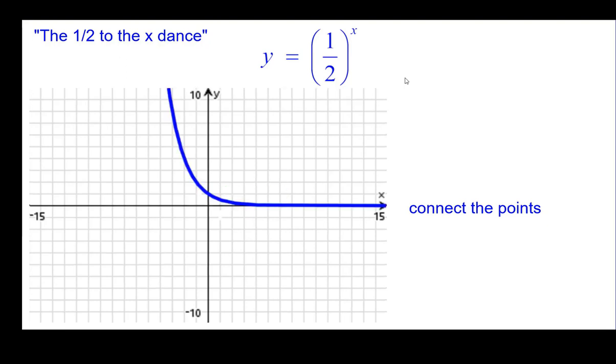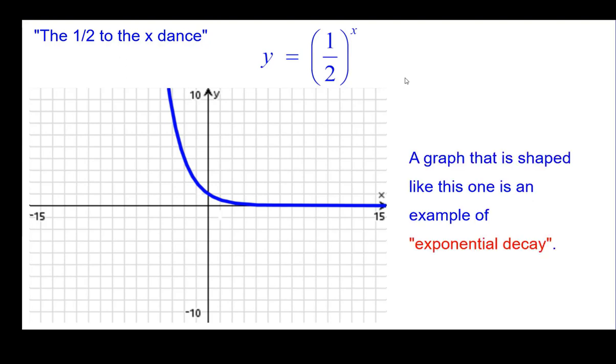Connect the points. And then remembering the end behavior that we talked about before. A graph that's shaped like this is one example of exponential decay. Meaning as x gets larger, the values decay. They get smaller. As opposed to y equals two to the x. It was exponential growth. Got grew. This is decaying. That's the phrase we will be using.